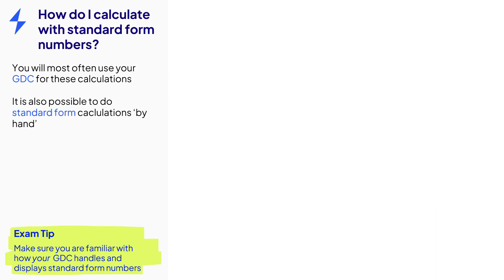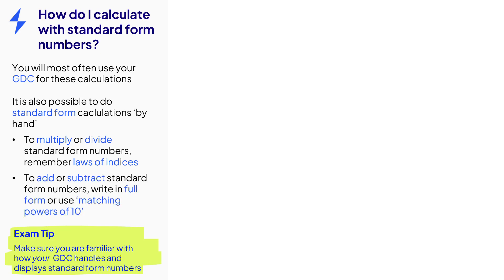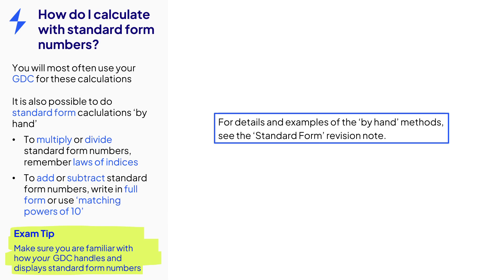And also note, it is possible to do standard form calculations by hand. If you're multiplying or dividing, it'll be helpful to remember laws of indices. If you're adding or subtracting them, then sometimes you can do it by writing them in full, or by using matching powers of 10. And for details and examples of these by-hand methods, see the standard form revision note.